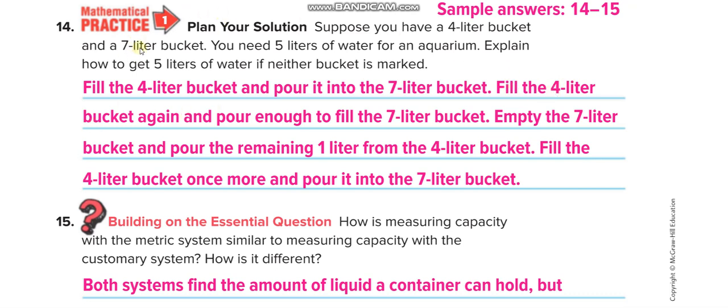Now again, you fill the four-liter bucket and put it in this seven-liter bucket. How much water will come in it? Three liters. And remaining how much left in this one? Four liters - one liter only. So you have one liter now in the four-liter bucket.